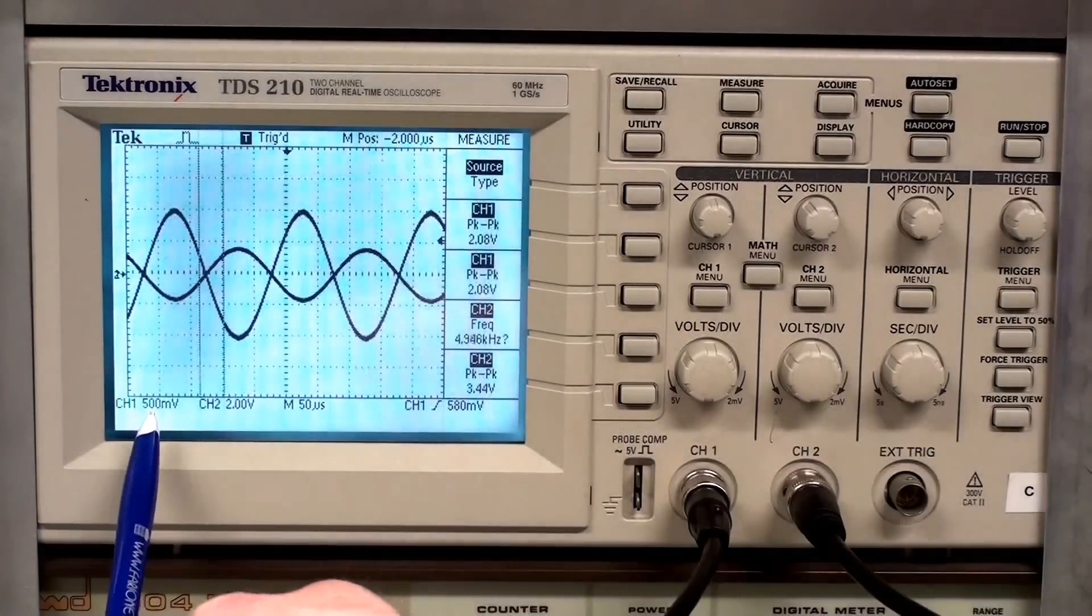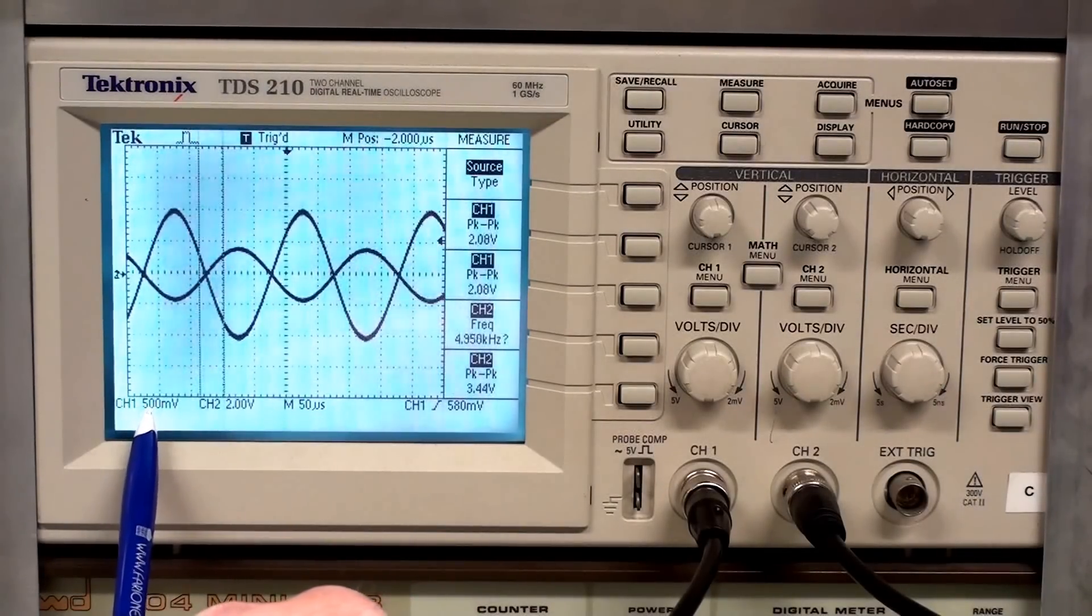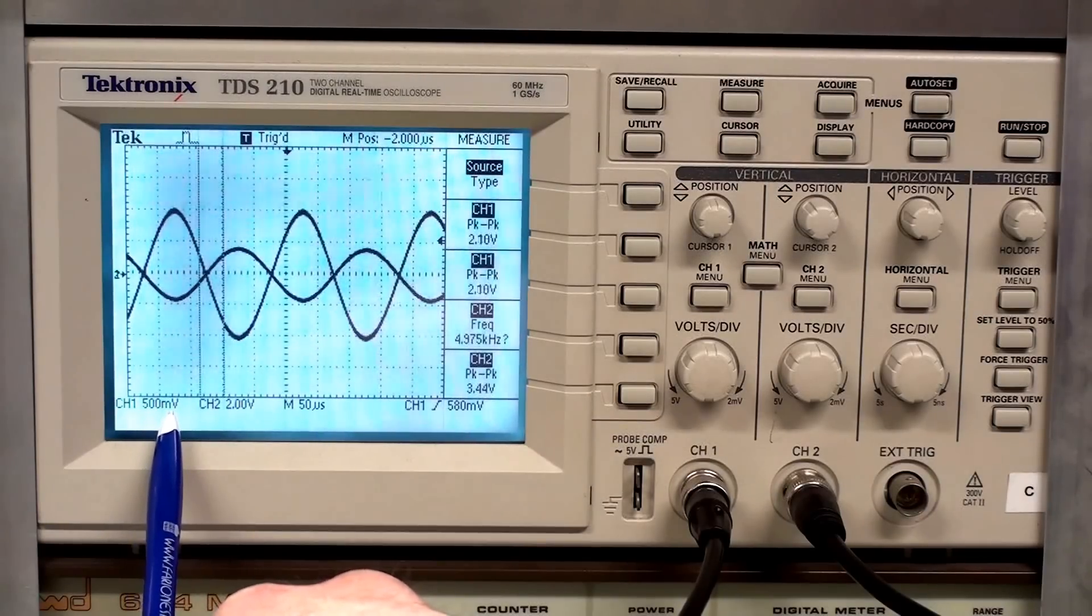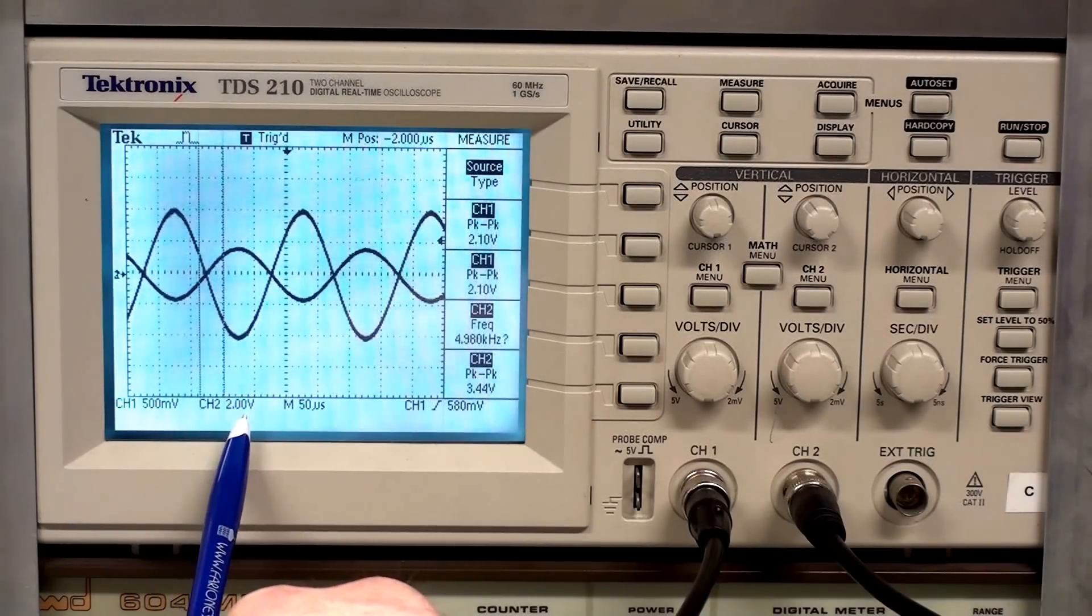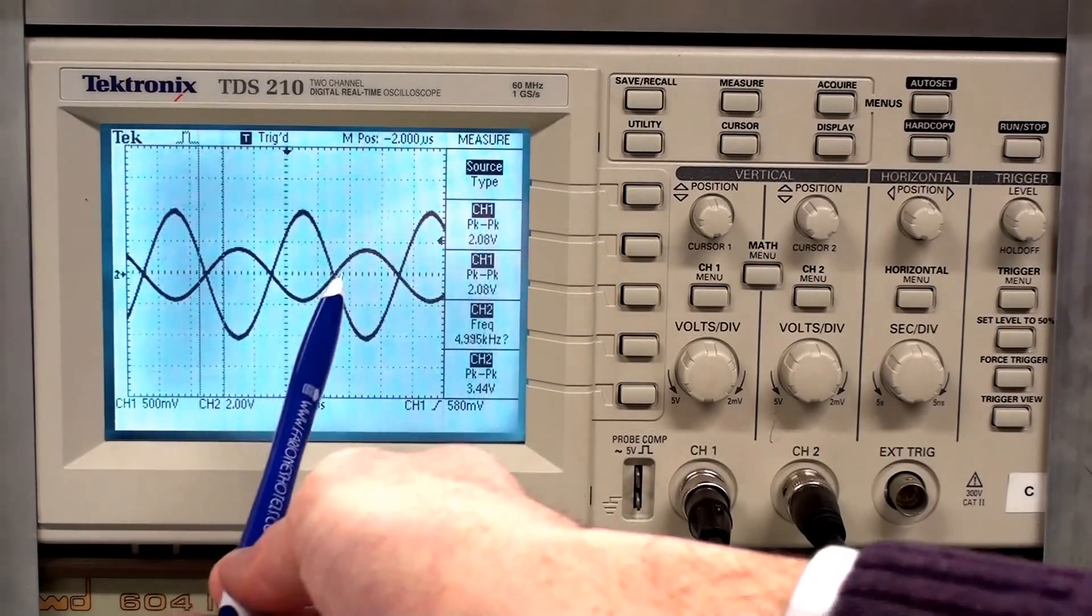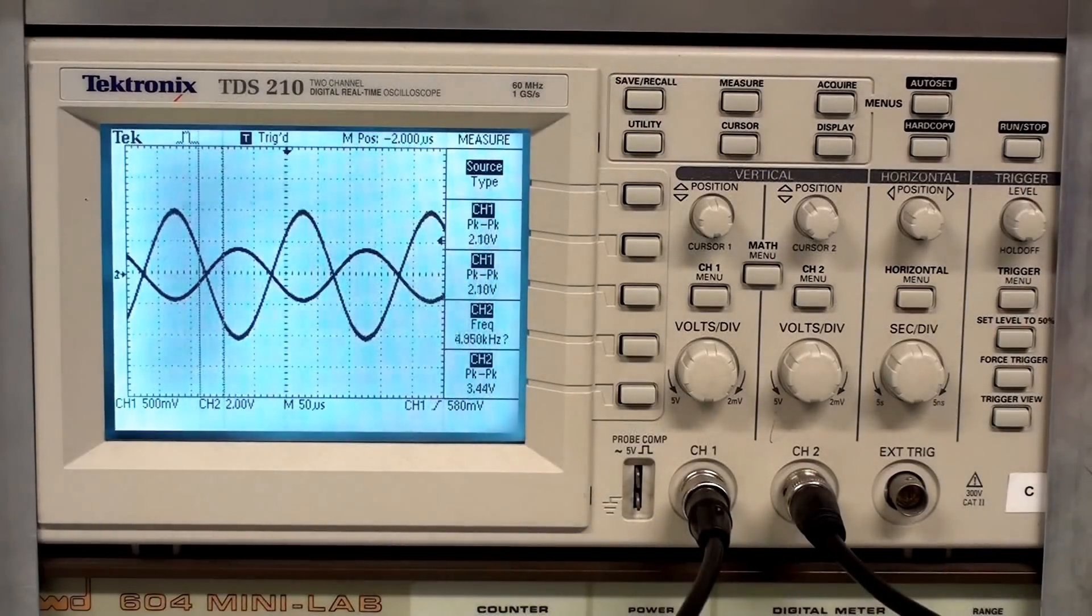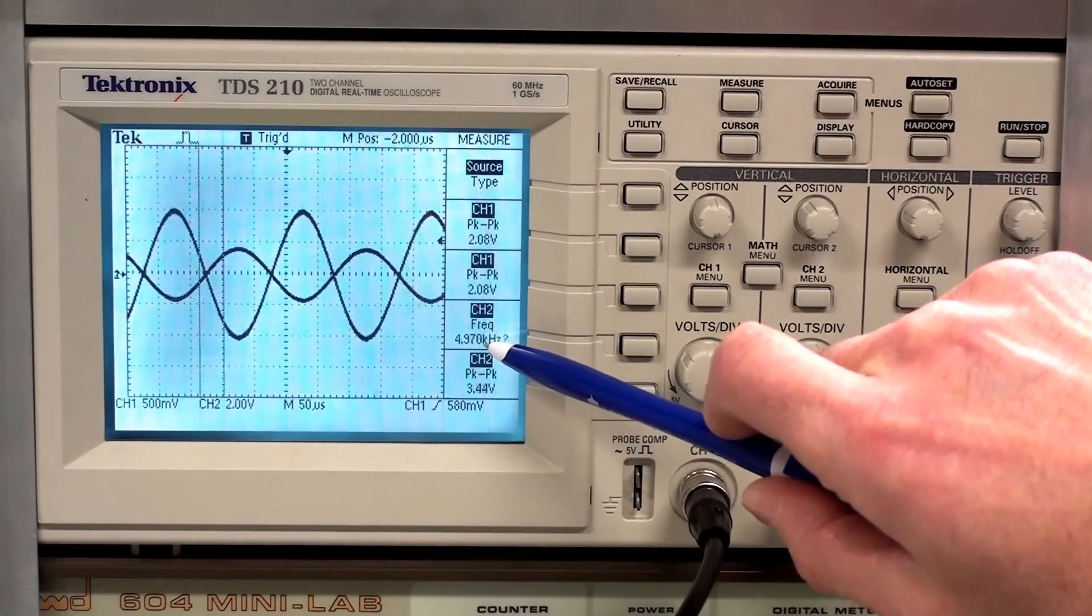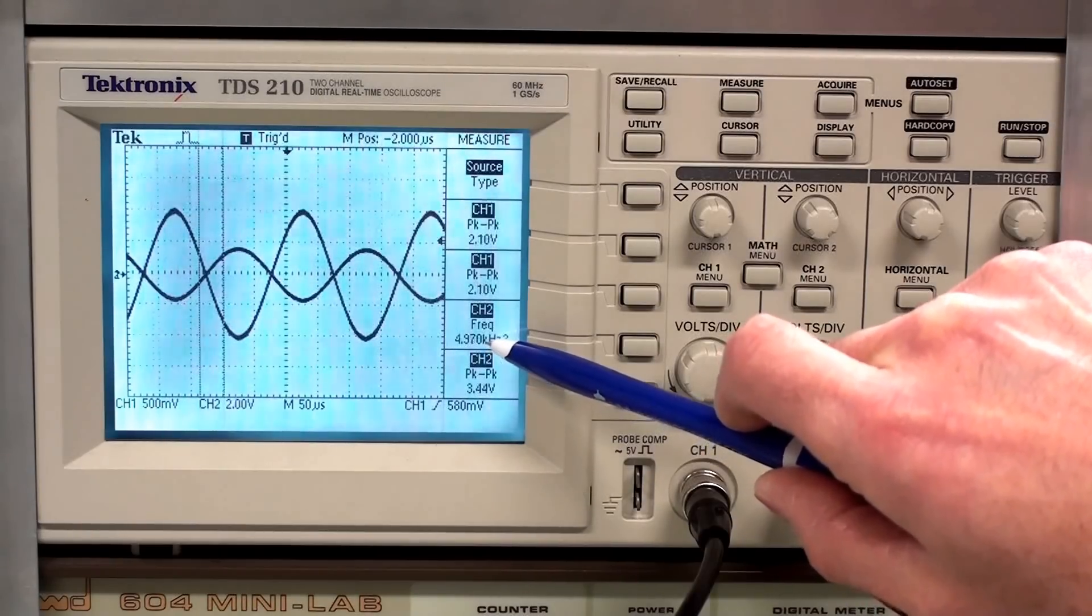You can also use these measurements down here. These measurements give the volts per division. For channel 1, it's 500 millivolts per division. And for channel 2, it's 2 volts per division. And the frequency, the time base, it's 50 microseconds per division on the scope. And the frequency, I have it set to about approximately 5 kilohertz.